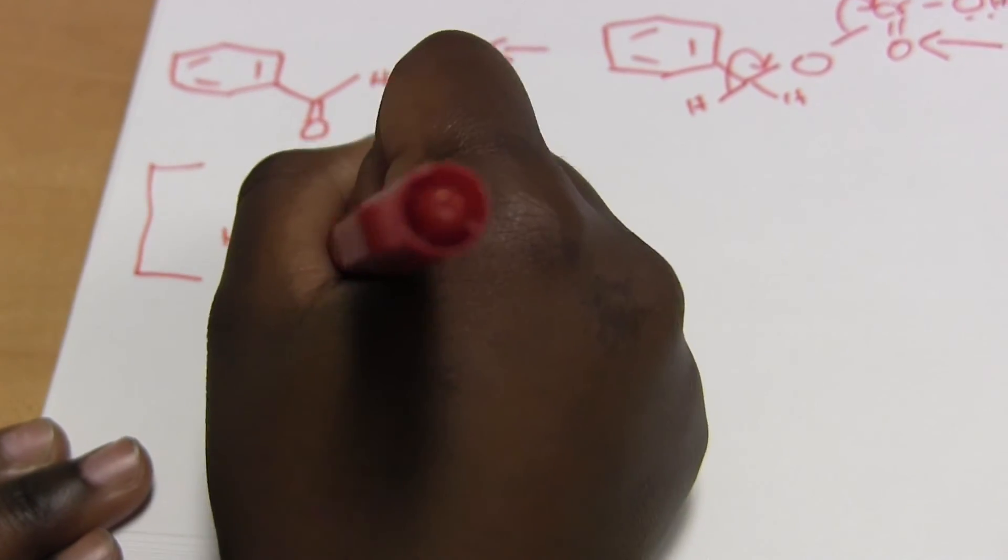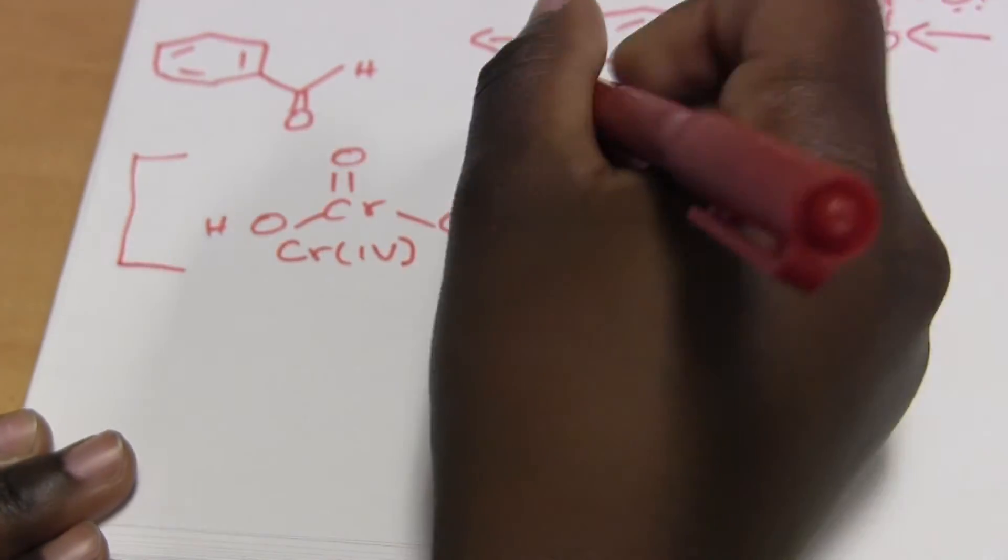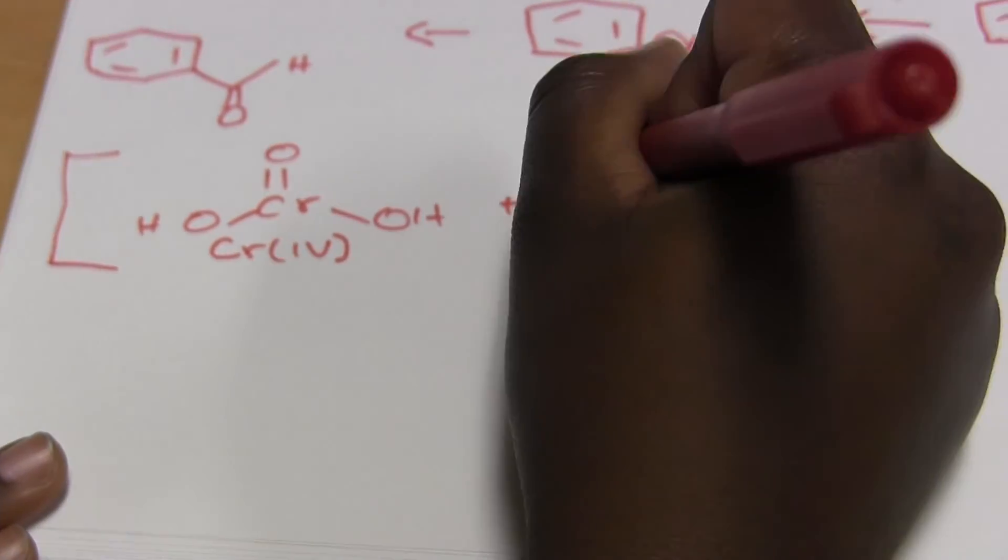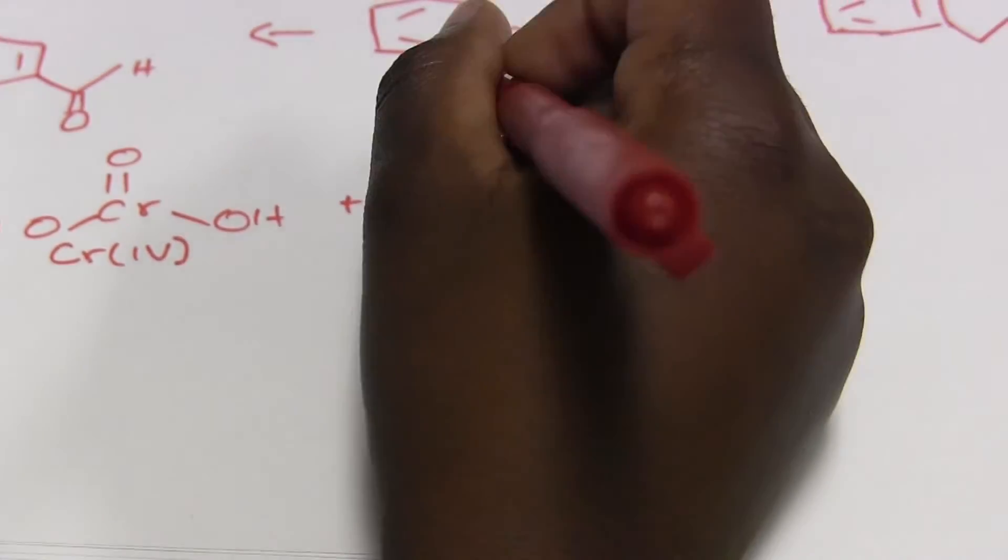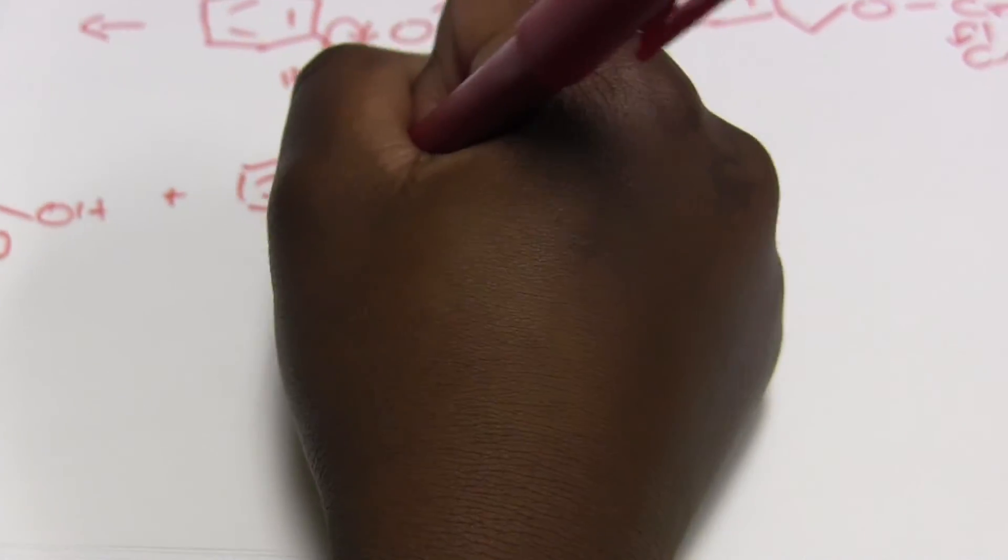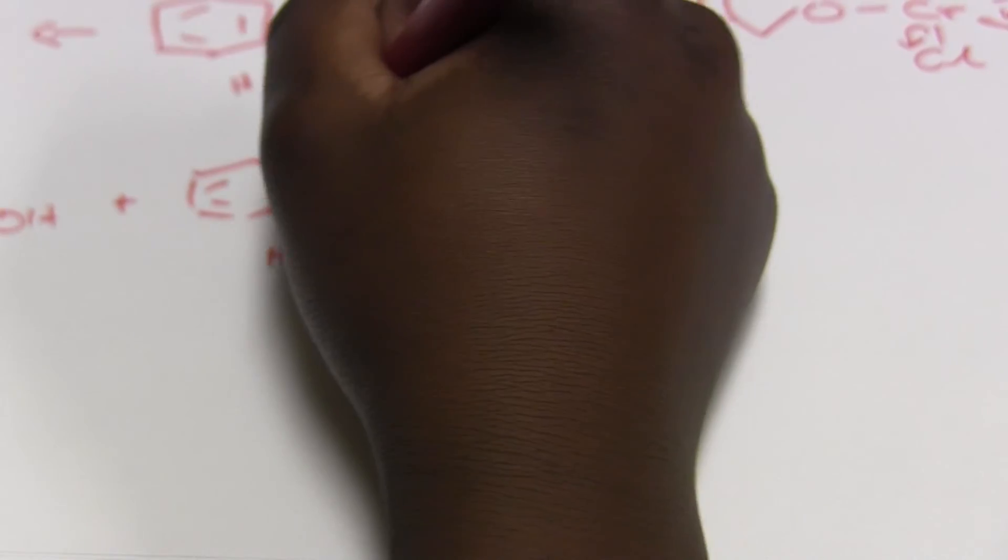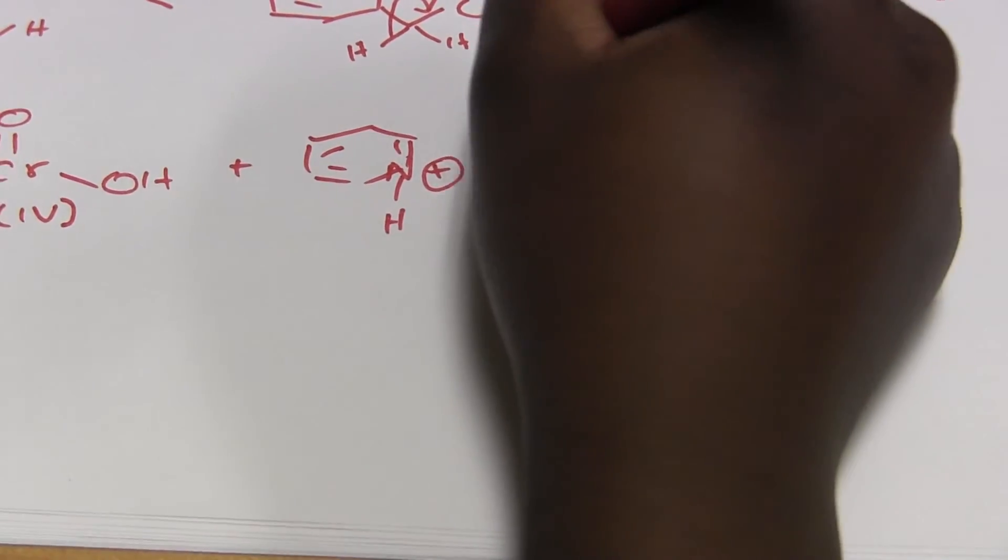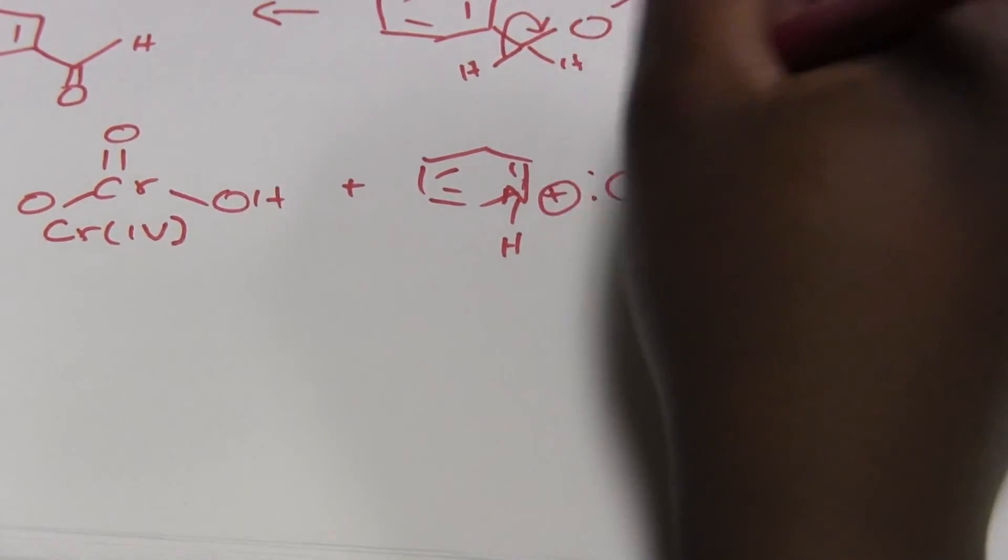And this is what we call chromium 4, along with the other part of the PCC and the chlorine with its negative charge.